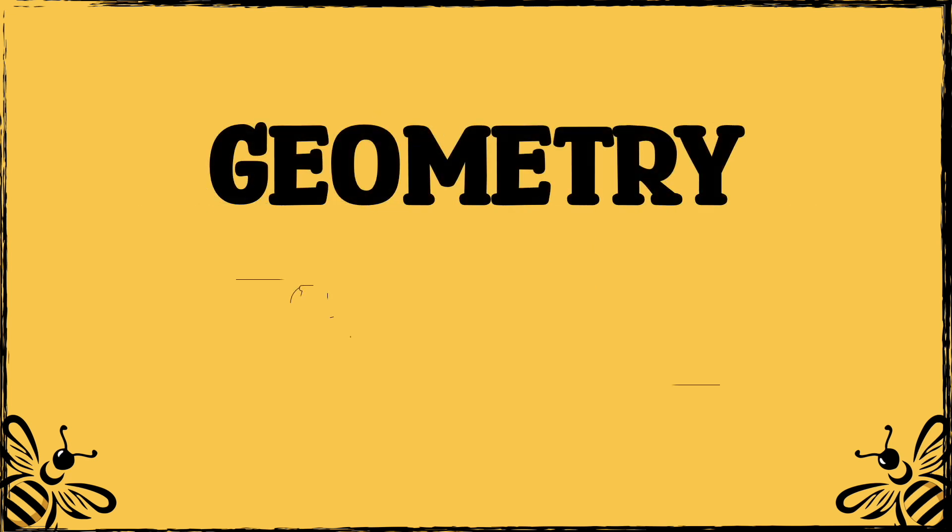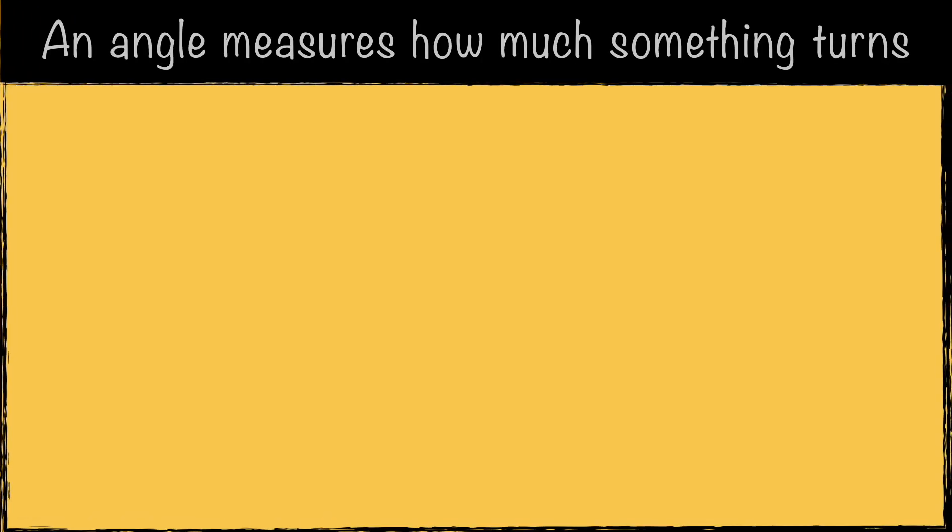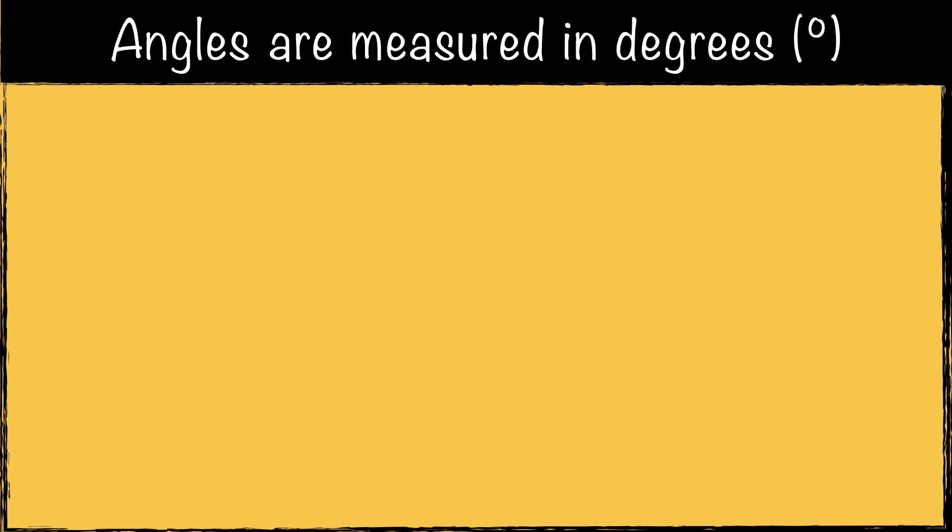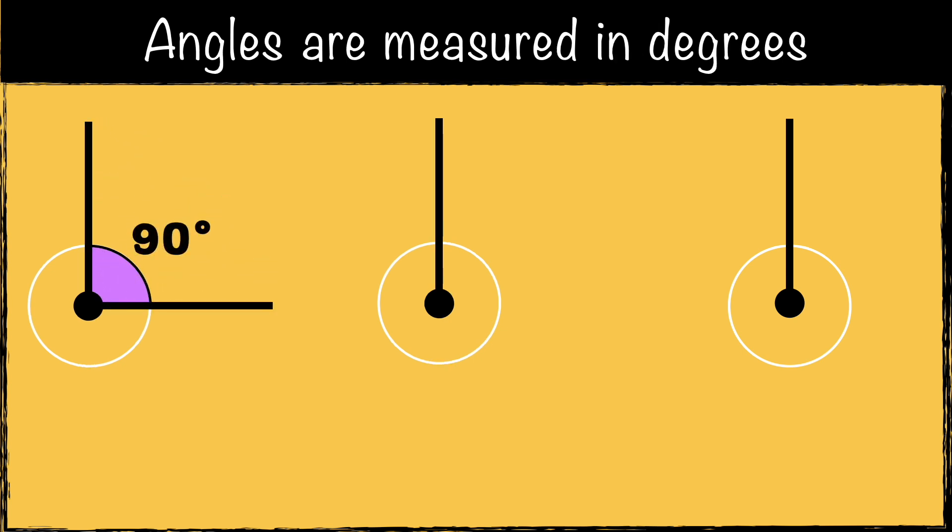In this video, we'll be learning about angles and how to measure them. An angle measures how much something turns. They're made when two lines meet, and we measure how much one line turns away from the other. We measure angles in degrees. Angles are measured around a circle, so a quarter turn is 90 degrees, a half turn is 180 degrees, and a full turn is 360 degrees.